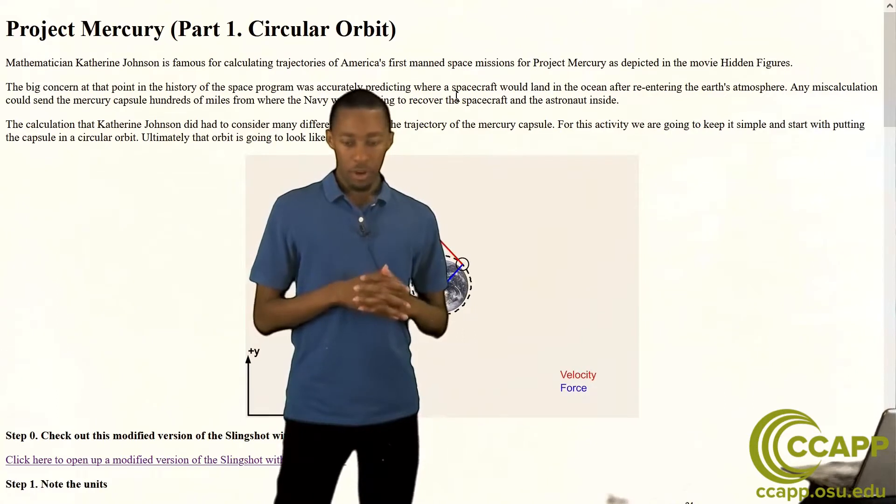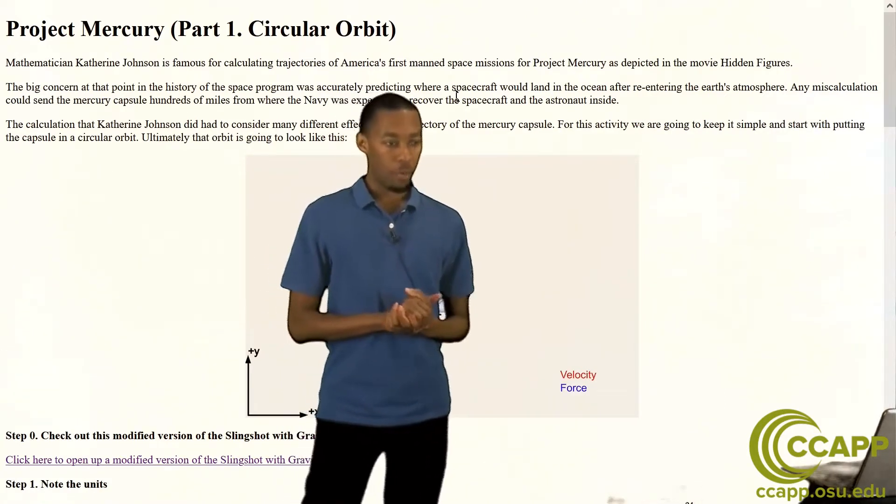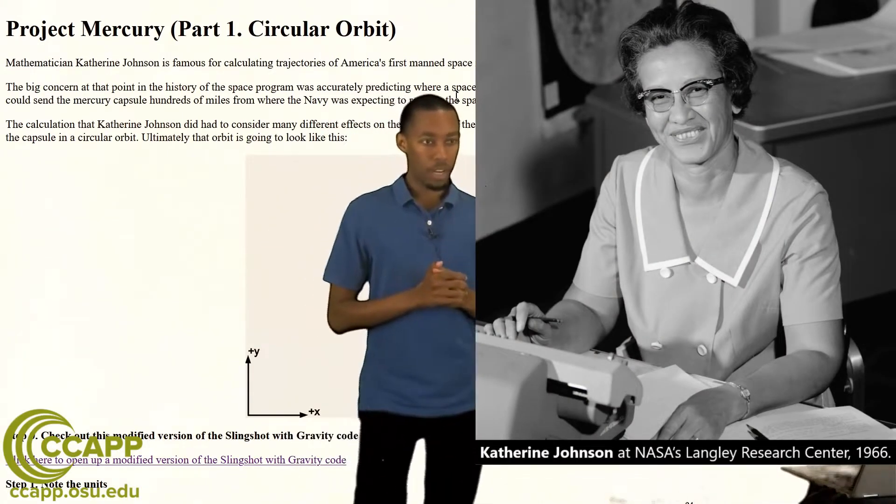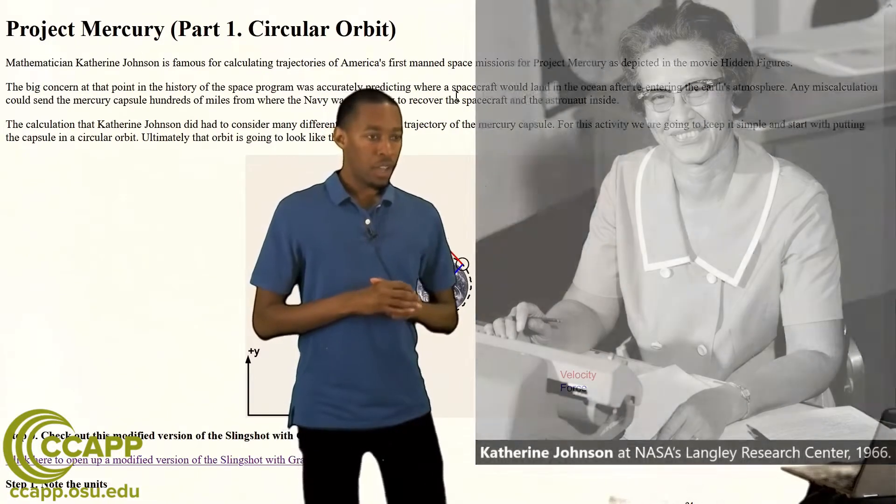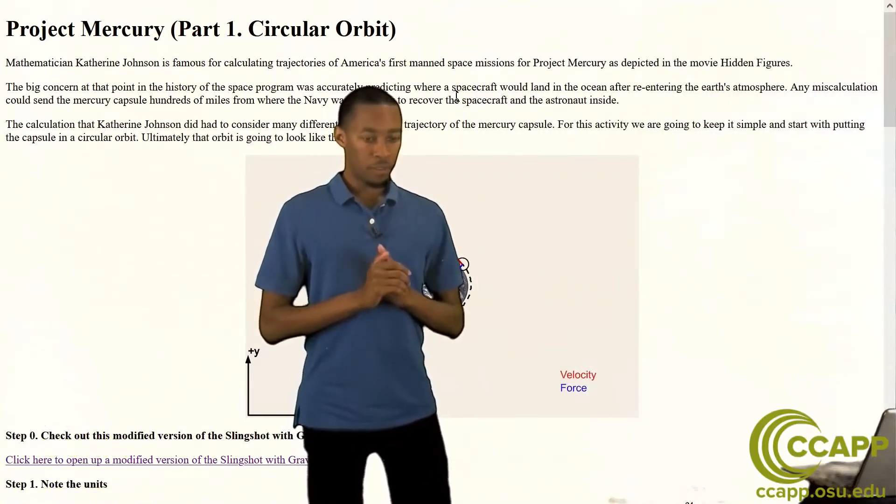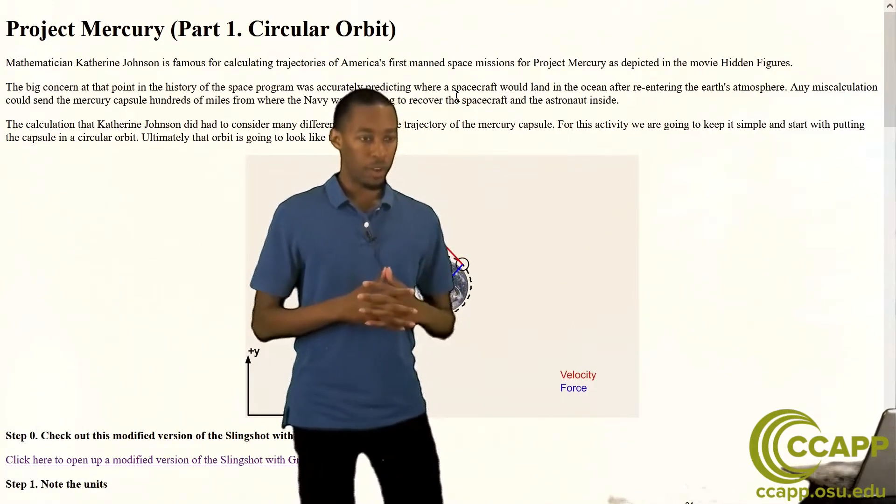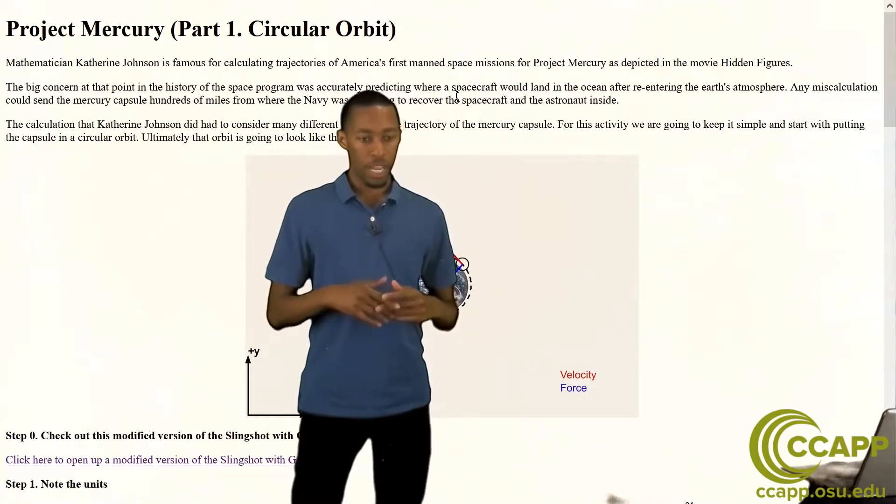Now NASA worked diligently on this early on and one of the first people they had working on this was mathematician Katherine Johnson. She was one of the first African-American women to work for NASA and she was very influential in putting together these equations that helped us figure out how to put someone into orbit and how to figure out where they're going to land when their orbit is done.